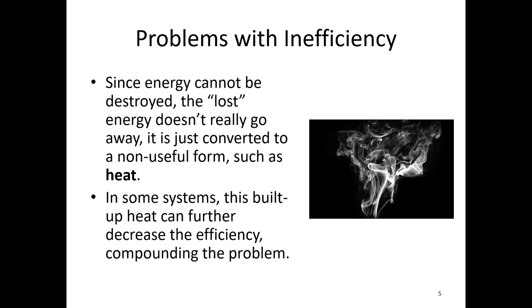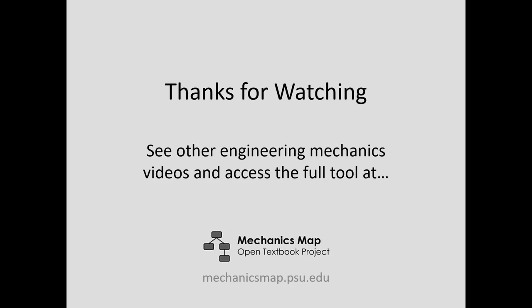Similarly with high-voltage power lines: the more resistance you have, the less efficient the system. Higher temperatures increase resistance in most substances, so if it's really hot and you're running a lot of voltage through the lines, they become less and less efficient. Eventually they get so hot they sag to the ground, touch one another, or otherwise fail. That's all for today's video lecture — thank you for watching, and I hope to see you again.